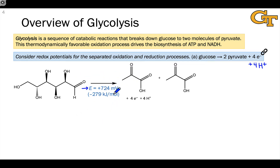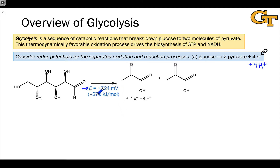Just to remind you, this is the potential that would be generated if we set up a galvanic cell with glucose and pyruvate on one side and the standard hydrogen electrode on the other side — we would expect a voltage of 724 millivolts. This is a quite favorable oxidation process.